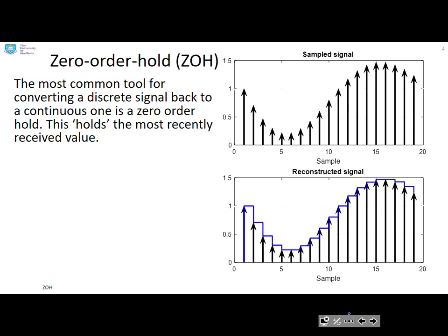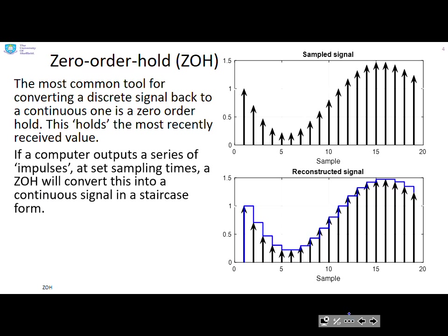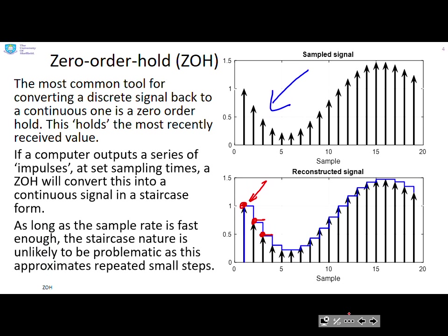So how are we going to combine our discrete signals with real systems based on continuous data? The most common tool for converting a discrete signal back to a continuous one is called a zero-order hold. This hold basically means we keep the most recently received value. So if a computer outputs a series of impulses, the zero-order hold converts this into a staircase — we keep the most recent value until we receive a new value, and then we keep that new value, and so on.